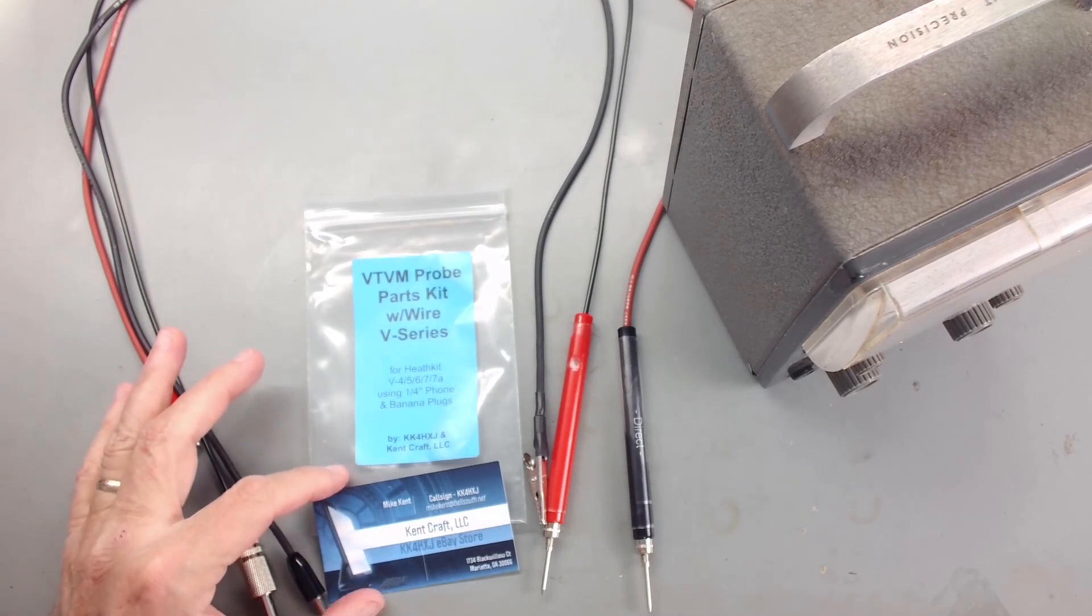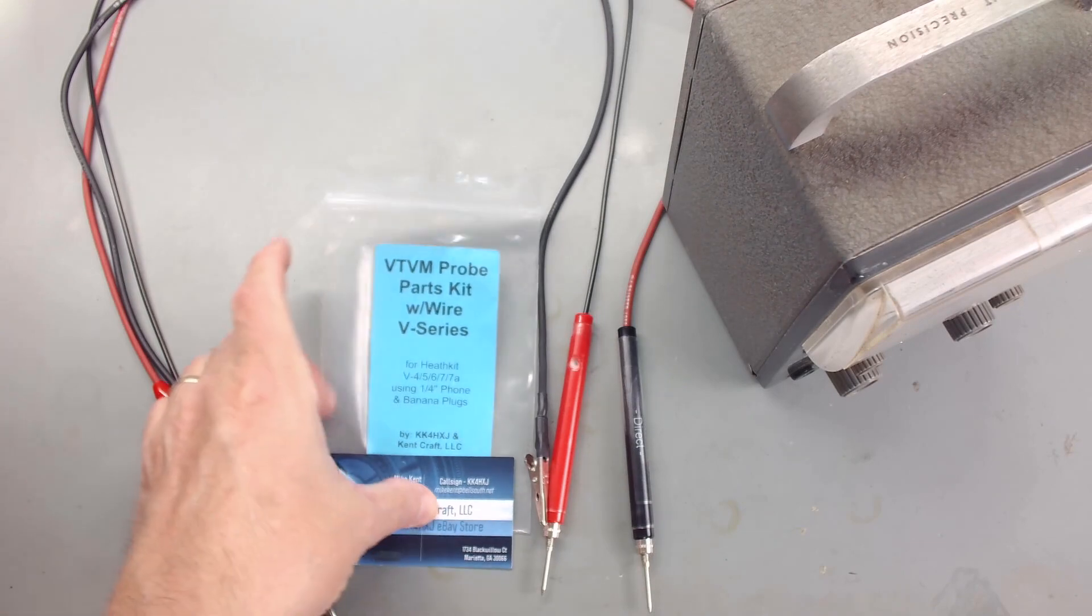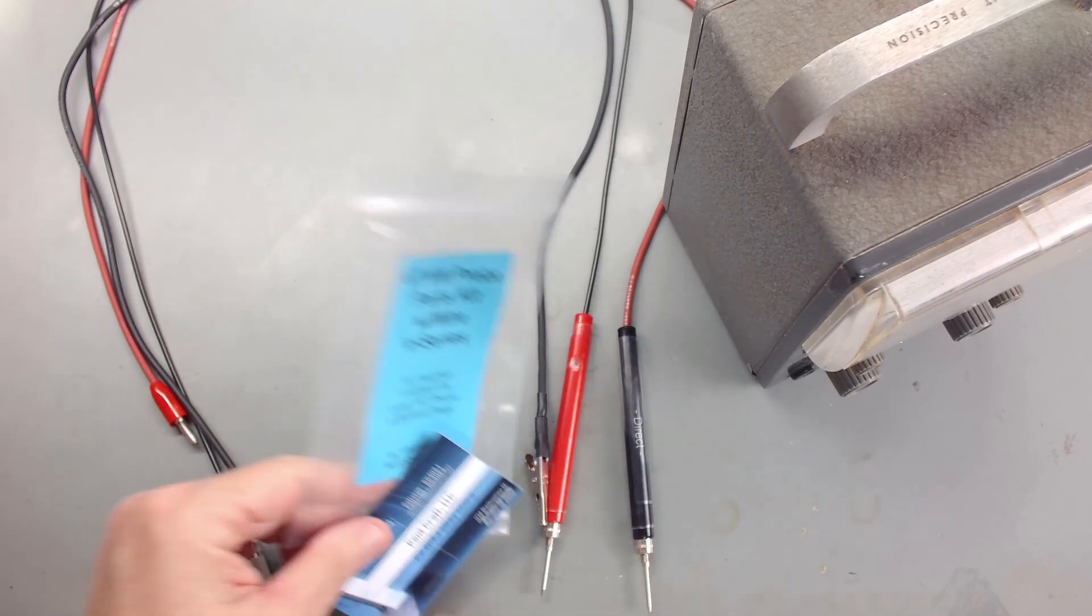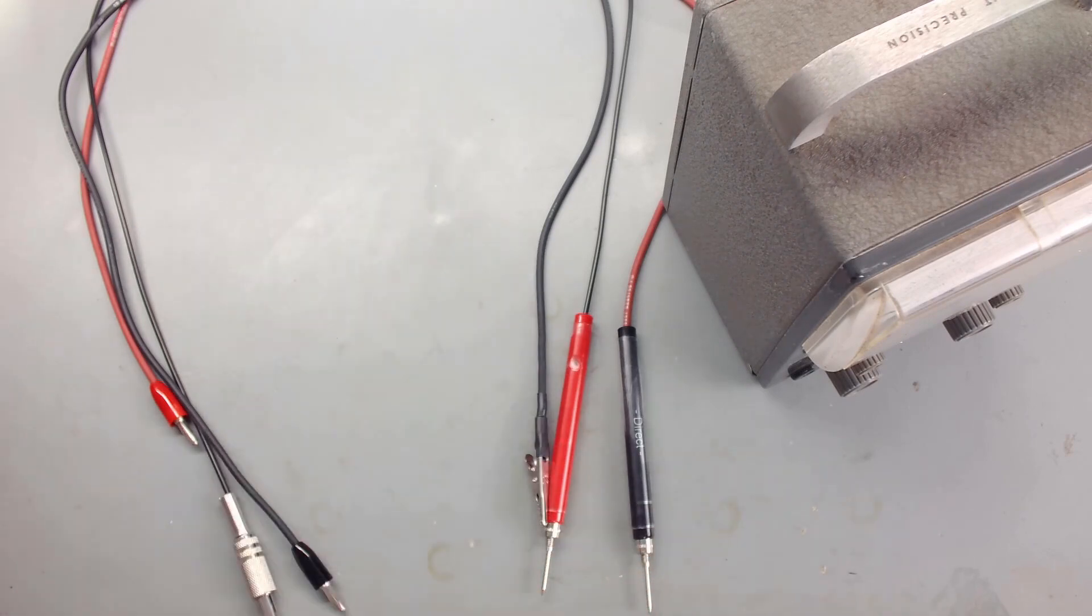And it's done by a ham, obviously K4HXJ and the company's Kent Craft. And maybe you can read this. So if you need probes, the price wasn't bad. It was like $18, $19. It was a nice little kit. So that saved me some time and I've got some probes and now we can do some testing on this meter.